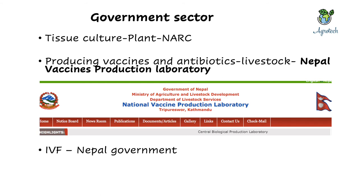Another government industrial activity is in vitro fertilization (IVF) in cattle. This is being done at commercial scale — the government stores sperm and provides IVF services to farmers' cattle. There are also paid conferences and seminars through different departments of NARC and government institutes like Tribhuvan University, which represent economic activities as well.